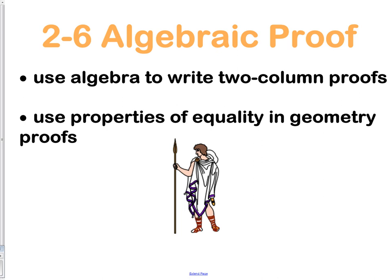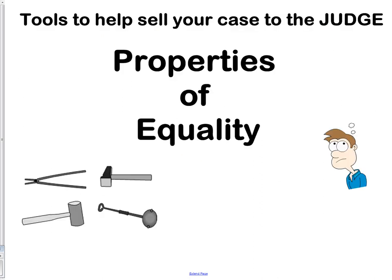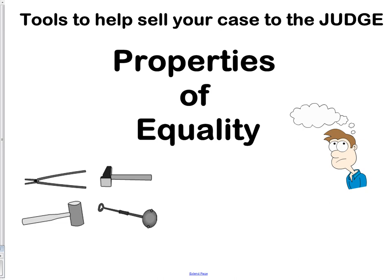In this section, we're going to use algebra to write a two-column proof. Previously, we've talked about paragraph proofs. Now we're going to get into two-column proofs. The biggest thing here is understanding the properties of equality and how to use them in a geometric proof. These are the tools we need to sell your case to the judge — you're proving yourself to be correct. In order to do this, we're going to use the properties of equality.